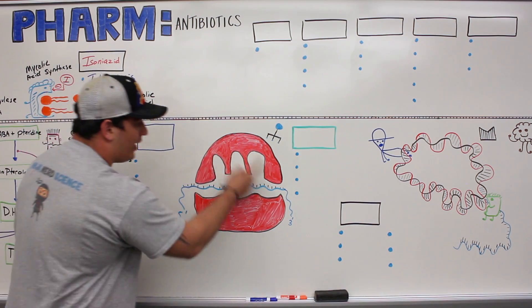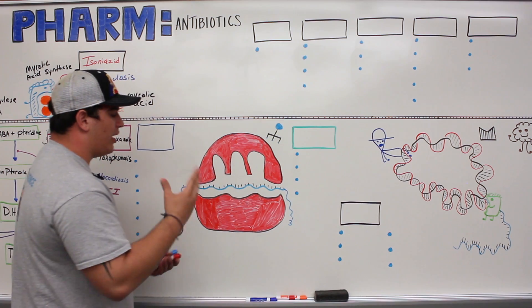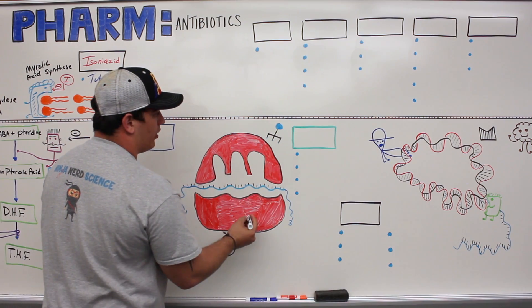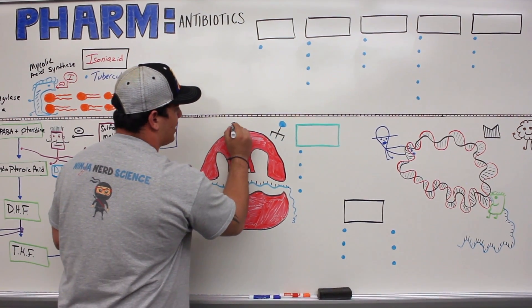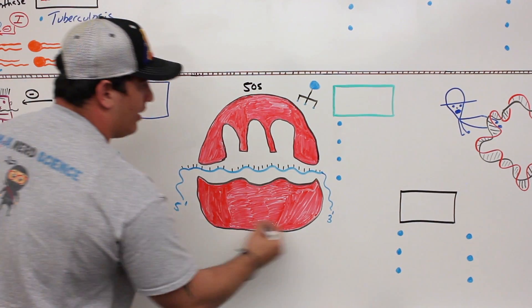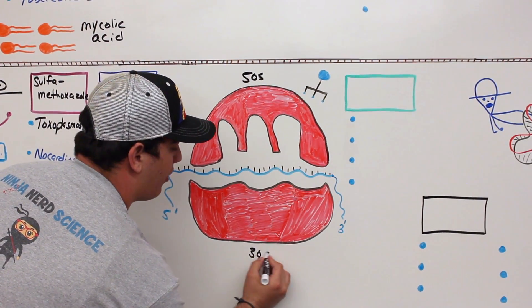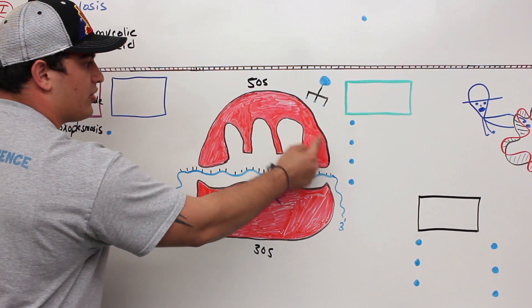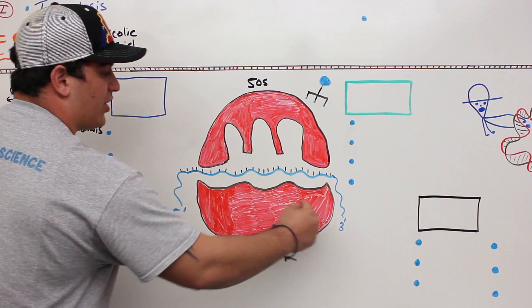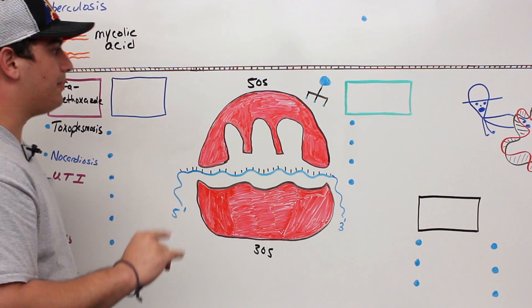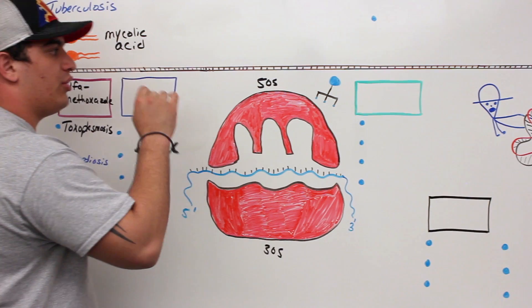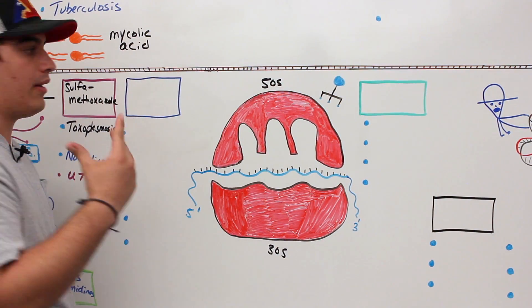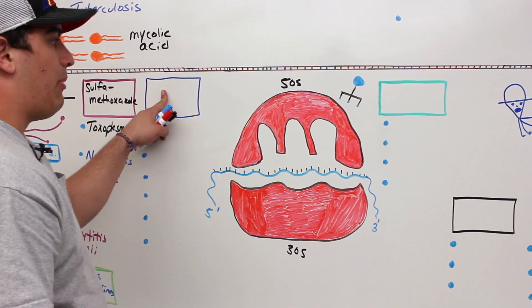Right here we have a ribosome. The ribosomes within prokaryotic cells, or bacterial cells specifically, are made up of two different subunits. You have what's called the 50s, which is the large ribosomal subunit, and then you have what's called the 30s, which is the small ribosomal subunit. The reason I'm mentioning this is because certain drugs attack the 50s rather than the 30s.